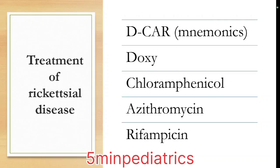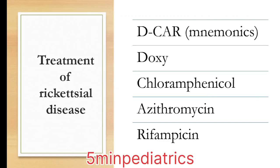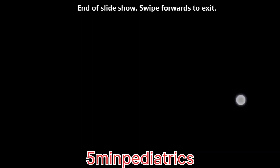The treatment mnemonic is D-CAR: Doxycycline, Chloramphenicol, Azithromycin, Rifampicin. Doxycycline is usually given for a minimum of five days, or until the patient is afebrile for at least three days, to prevent recurrence. I hope you enjoyed this video — kindly like, subscribe, and follow my channel.